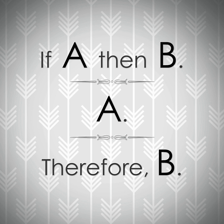In philosophy and mathematics, a logical form of a syntactic expression is a precisely specified semantic version of that expression in a formal system. Informally, the logical form attempts to formalize a possibly ambiguous statement into a statement with a precise, unambiguous logical interpretation with respect to a formal system. In an ideal formal language, the meaning of a logical form can be determined unambiguously from syntax alone.